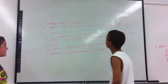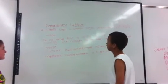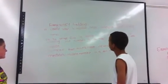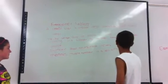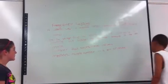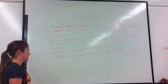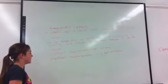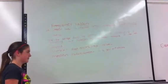Frequency tables are a useful way to organize large amounts of data. Mean is the average amount, adding all the numbers and dividing the numbers by how many numbers in the set. Mode is the number that occurs most often. The median is the middle number in a set of data.